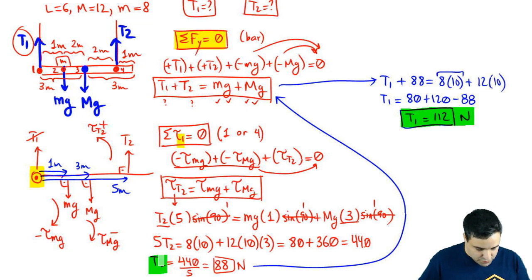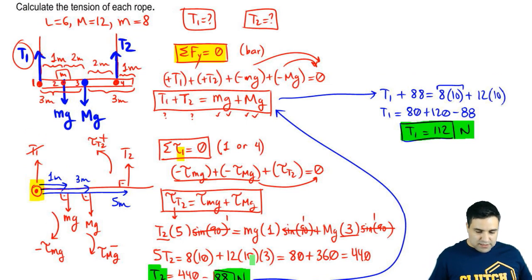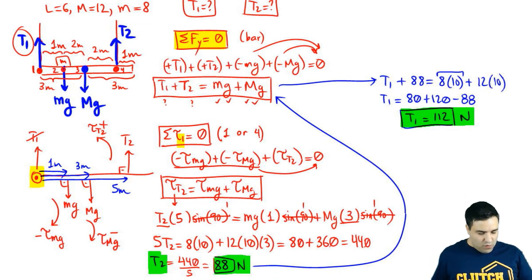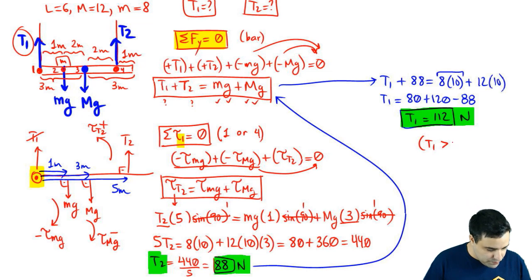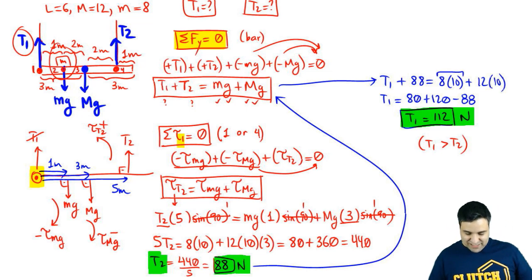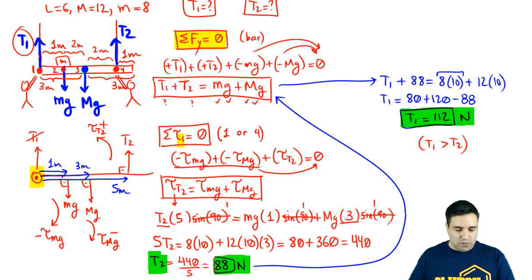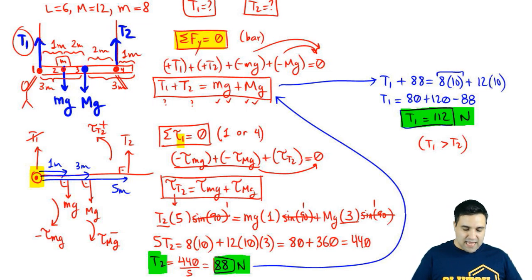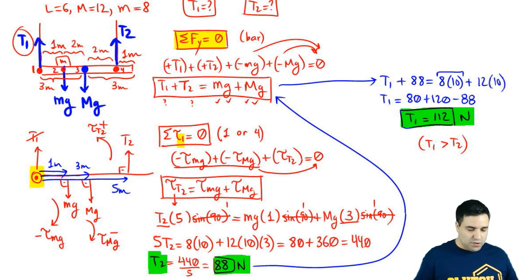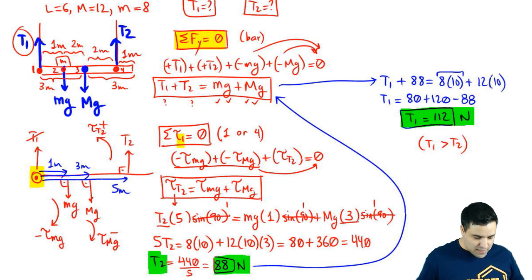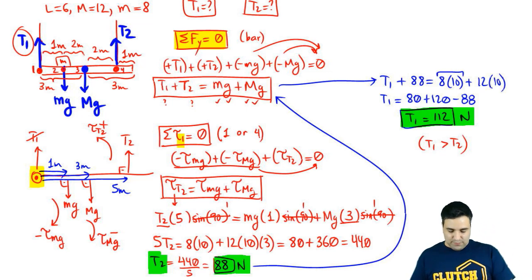So T1 = 112 N and T2 = 88 N. Notice T1 is bigger than T2, which makes sense because the 8 kg mass is closer to T1. Imagine holding the board on the left while a friend holds the right — you'd have to exert more force because the block is closer to you. You can use that physical reasoning to check whether your answers are likely correct.